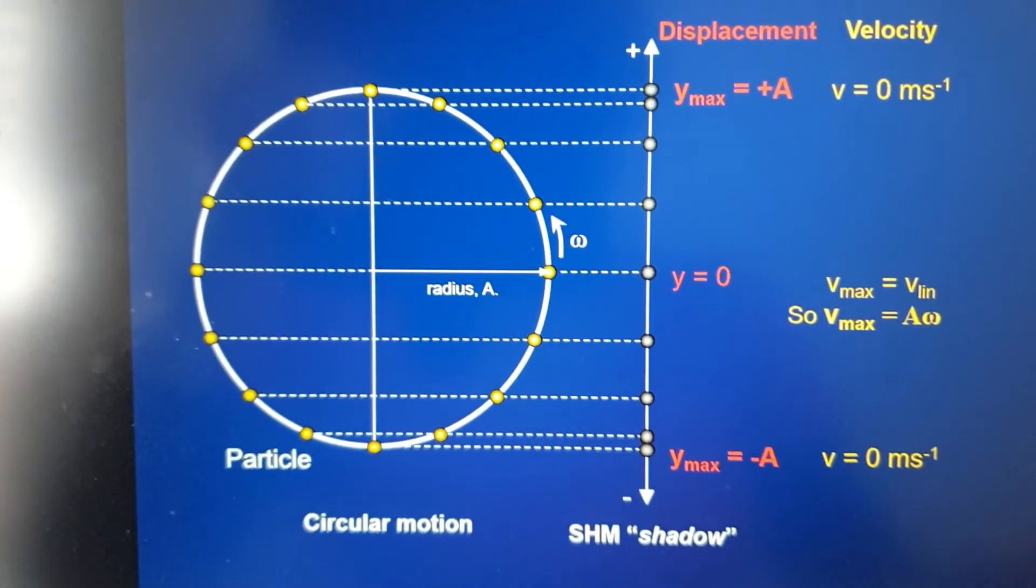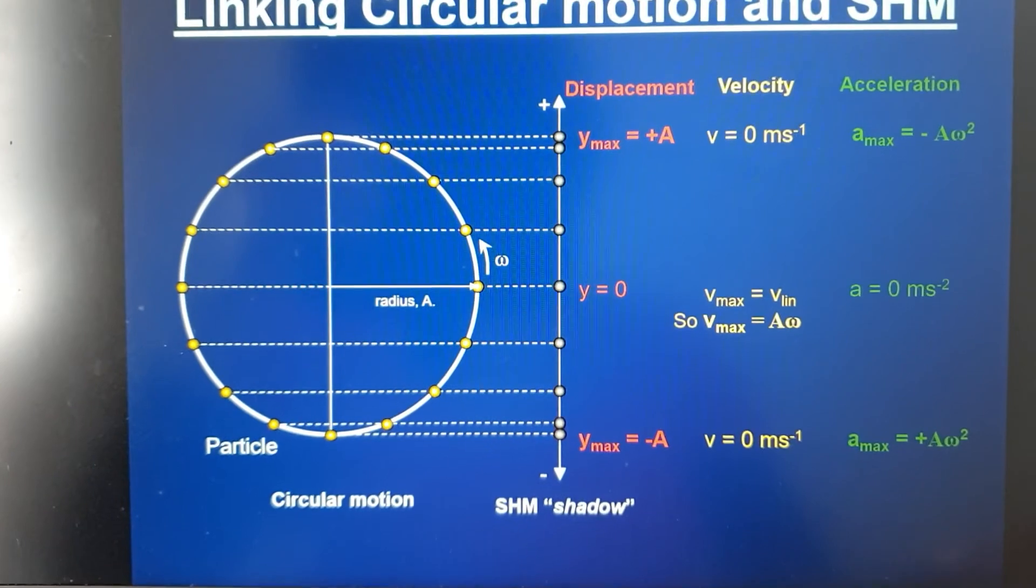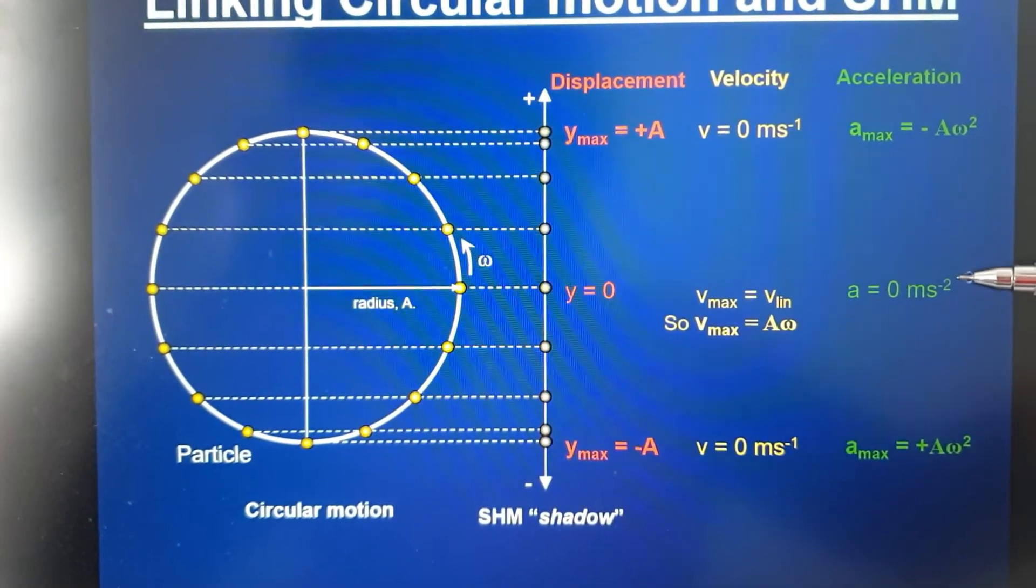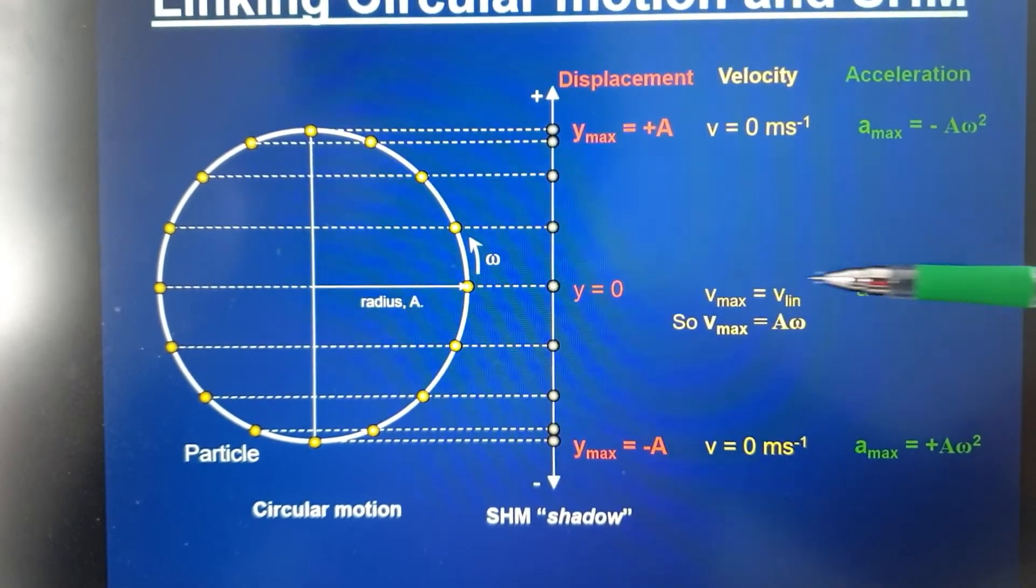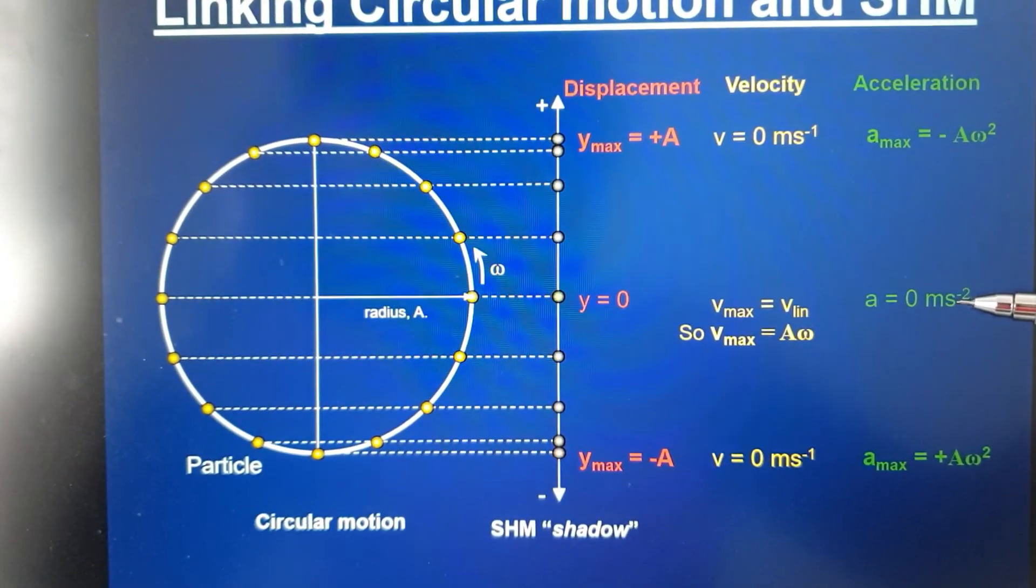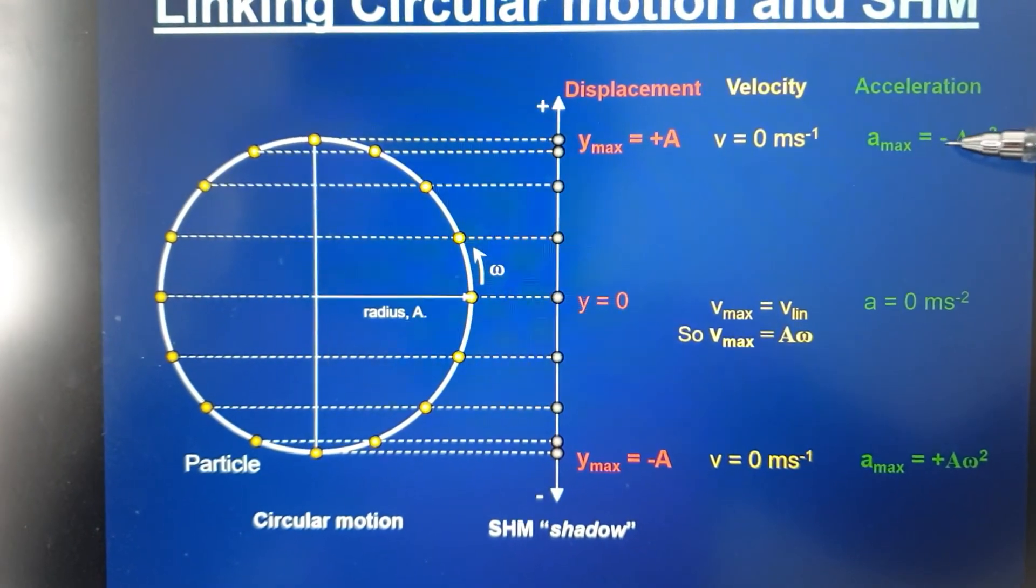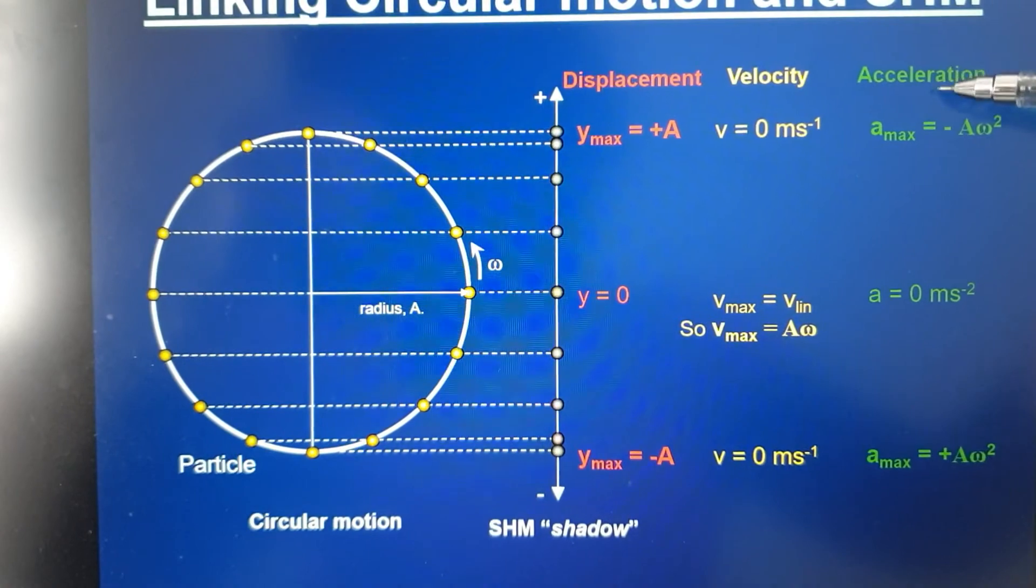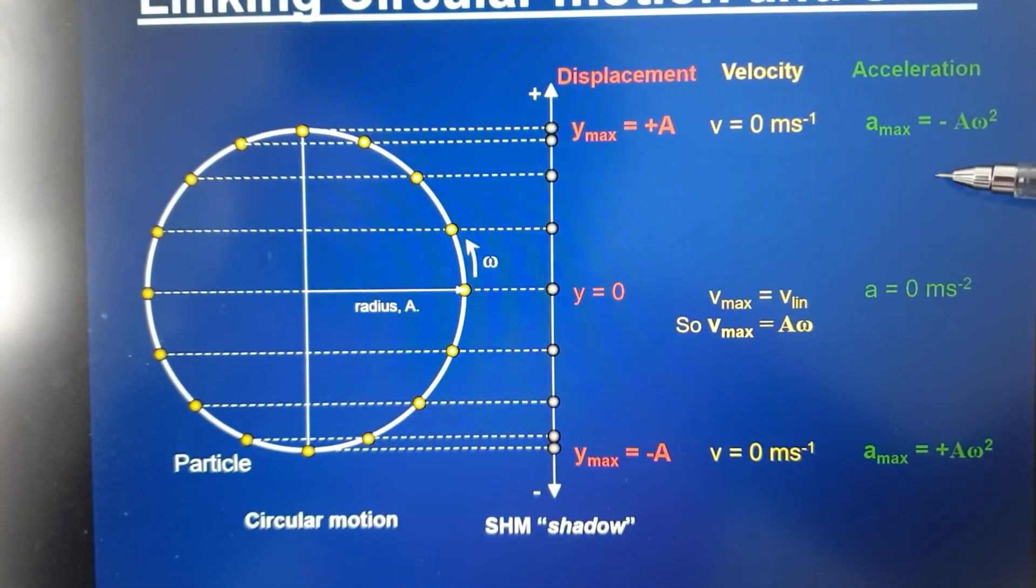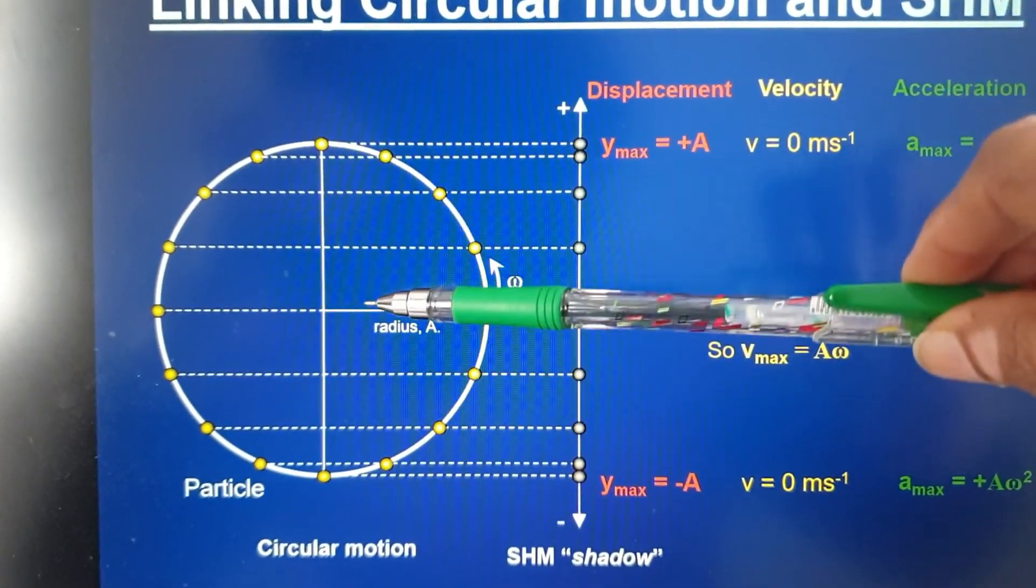Looking at acceleration, it's just come up in green. Acceleration is zero in the center. It's proportional to displacement, so when displacement is zero, acceleration is zero. When displacement is a maximum positive maximum, acceleration is a negative maximum. It's proportional but in the opposite direction. Remember, acceleration is always directed towards the center, whereas displacement is always away from the center.